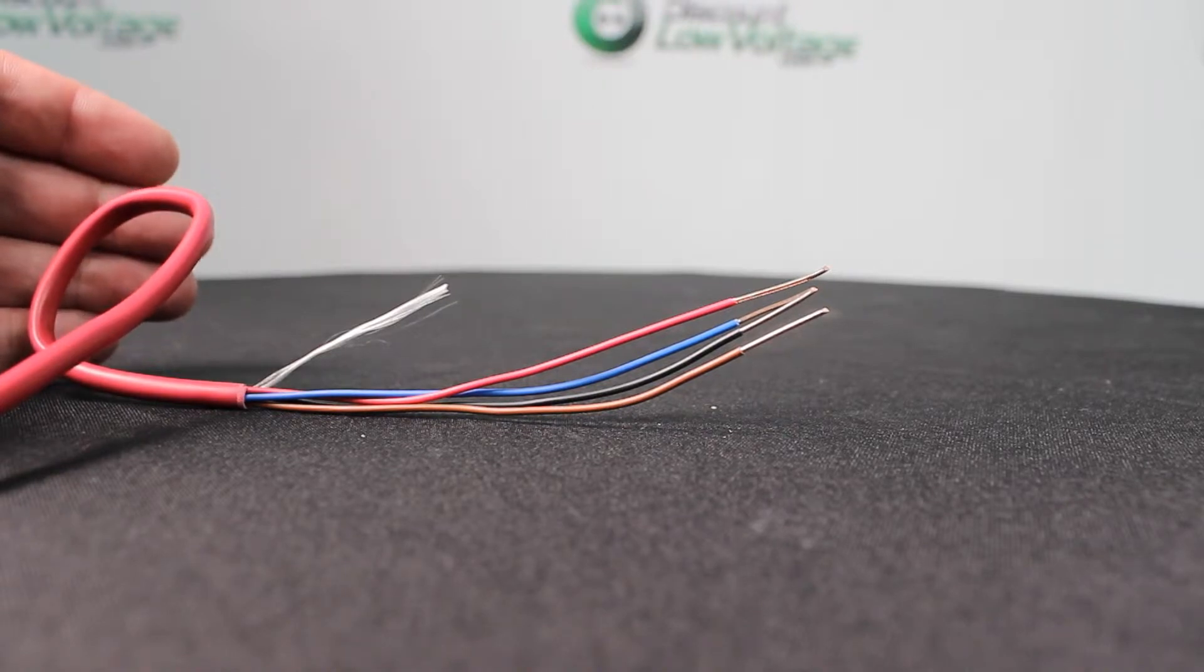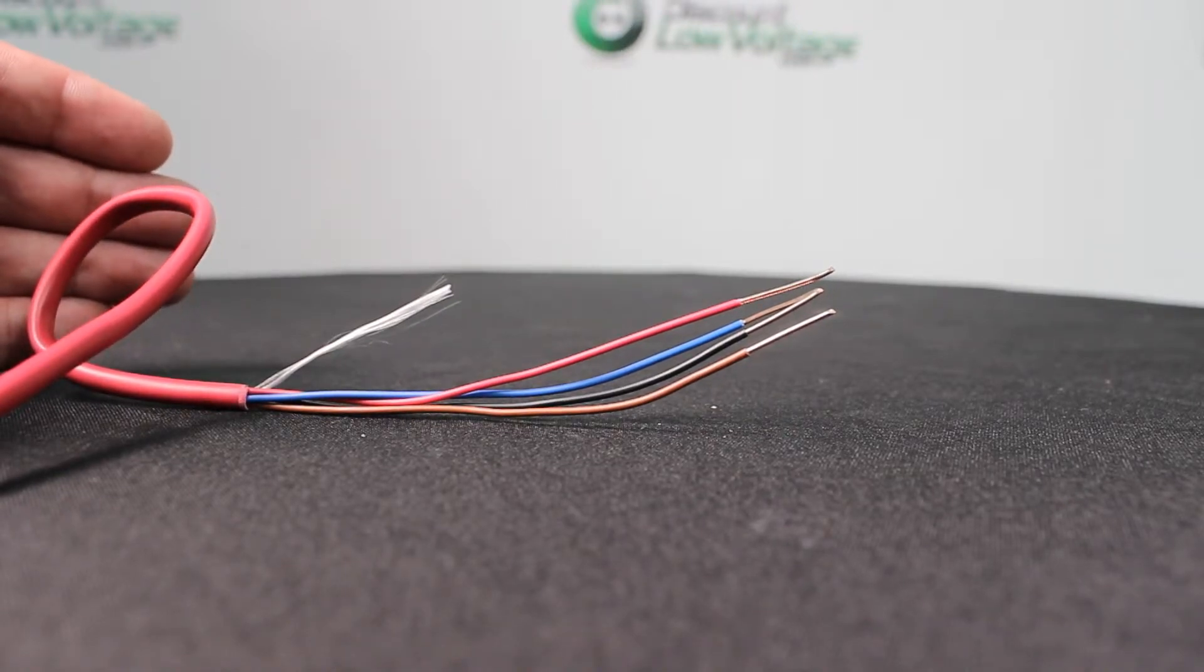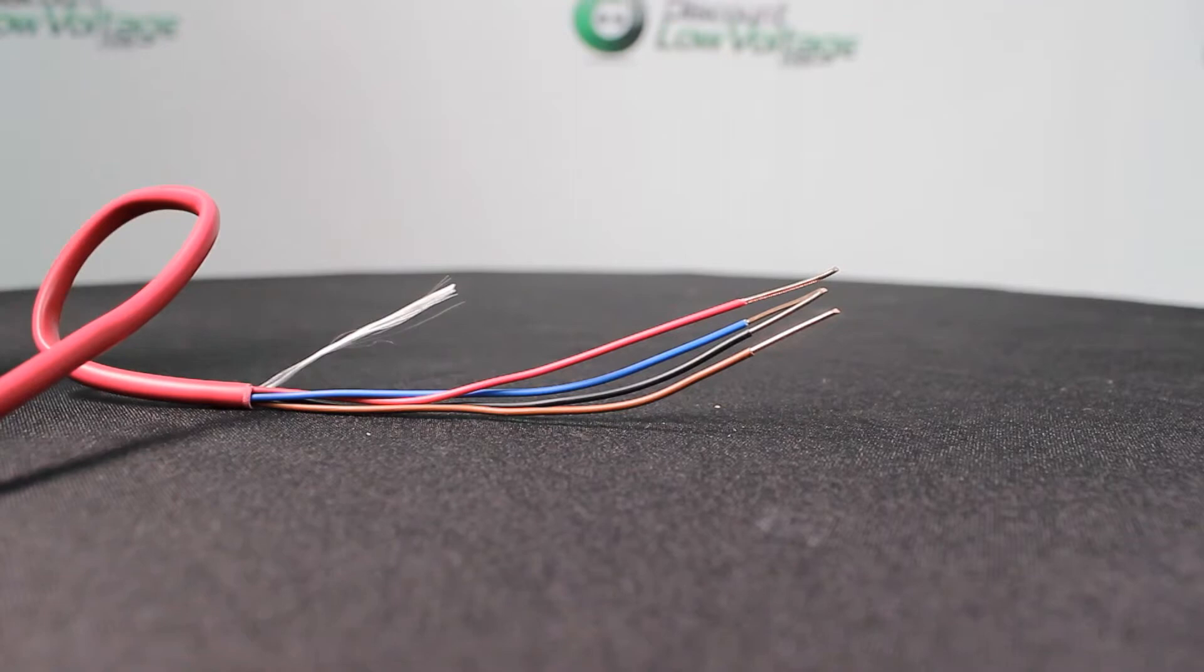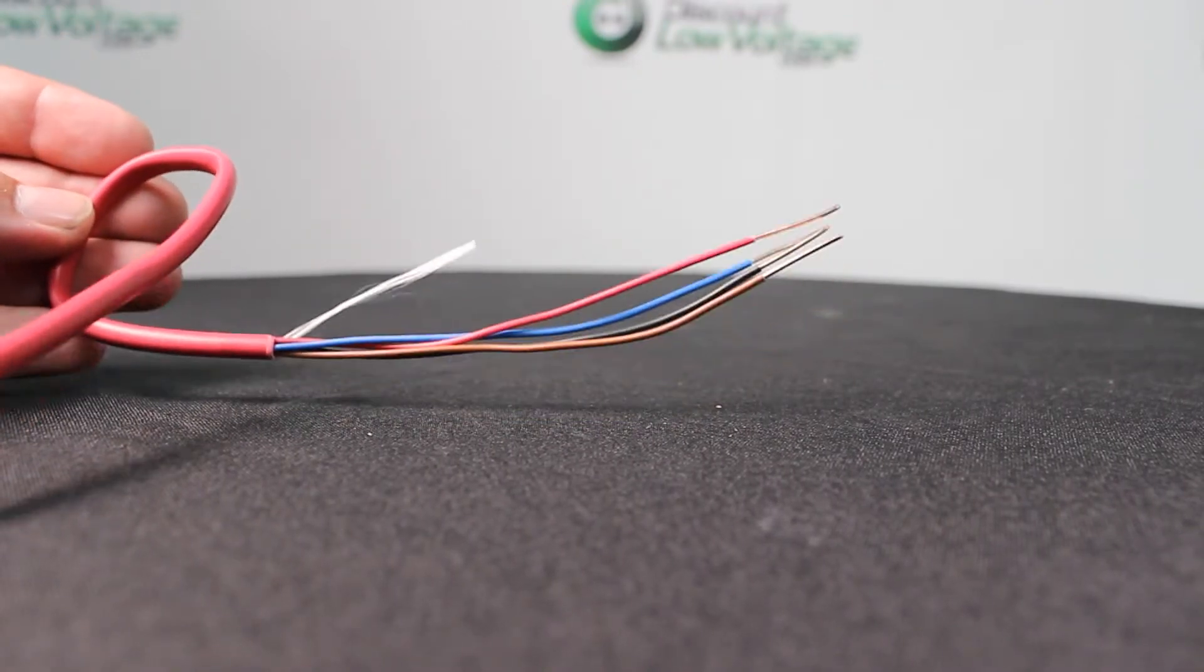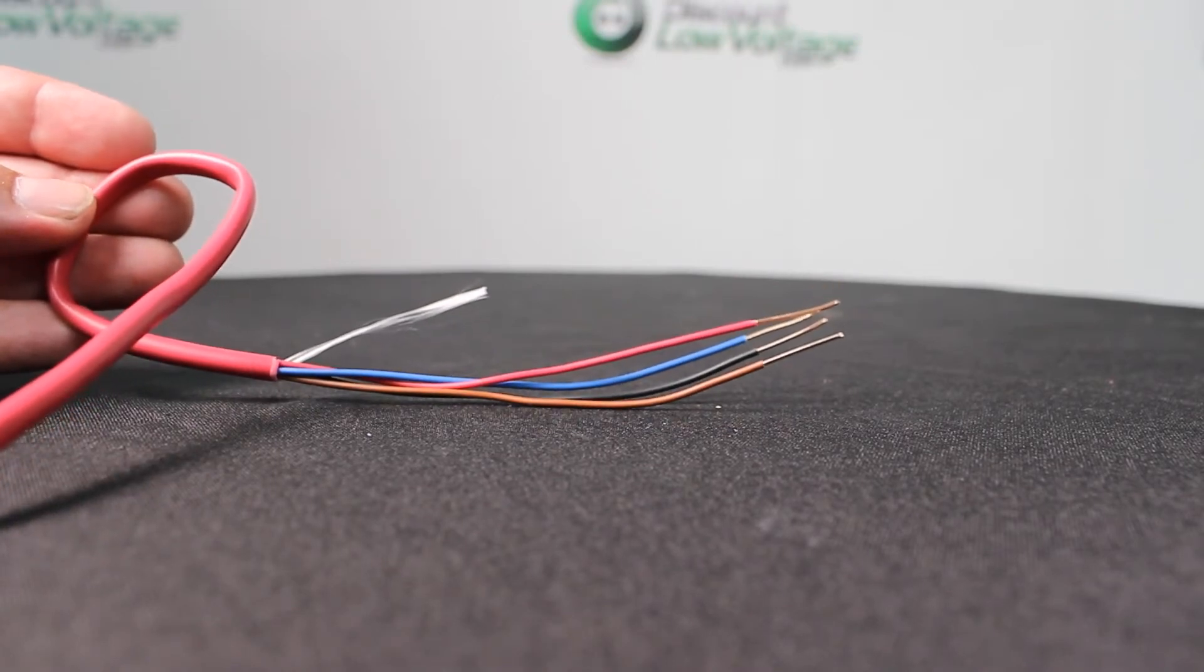The fire alarm cables are used for a variety of life safety devices such as smoke detectors, alarm notification strobes, sirens, pull stations, pretty much anything that's fire related. You're going to be using this type of cable.